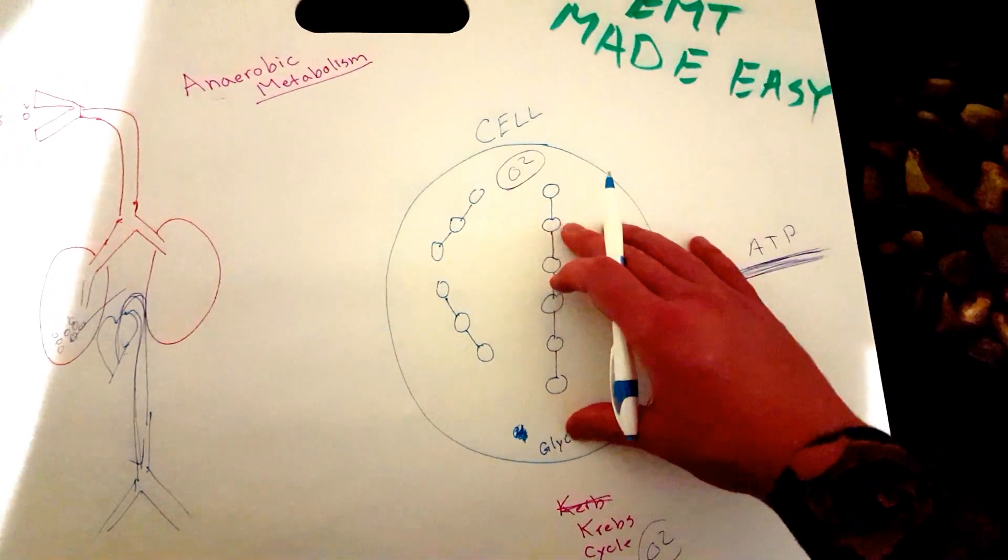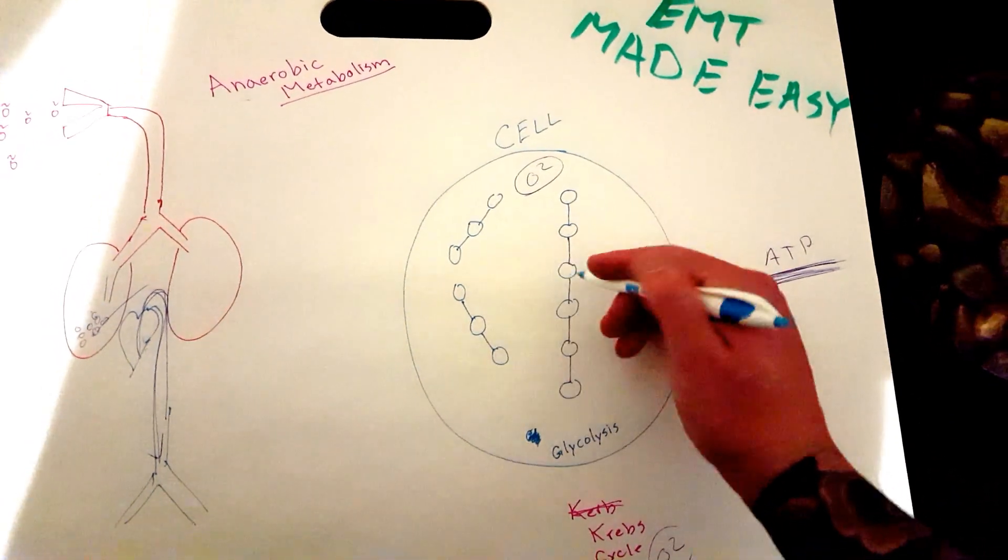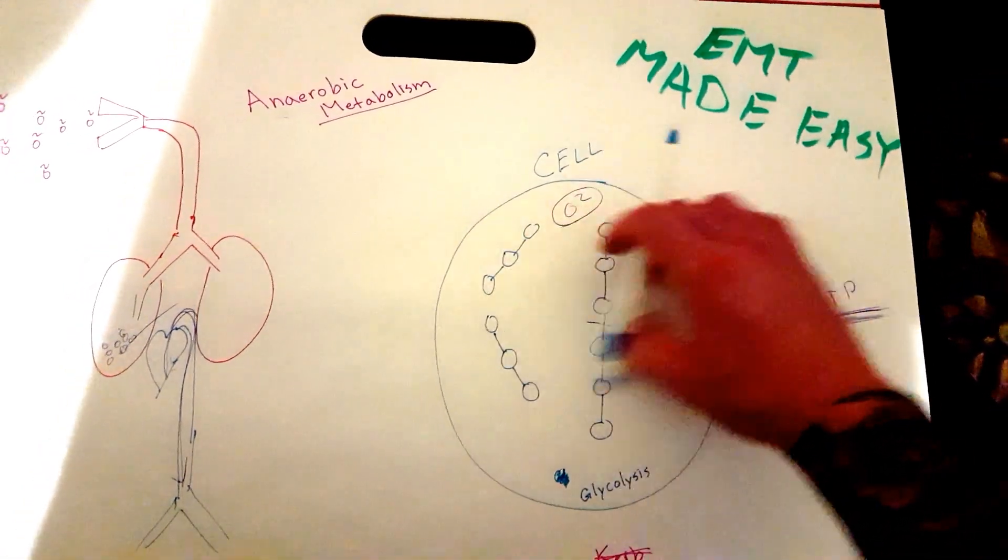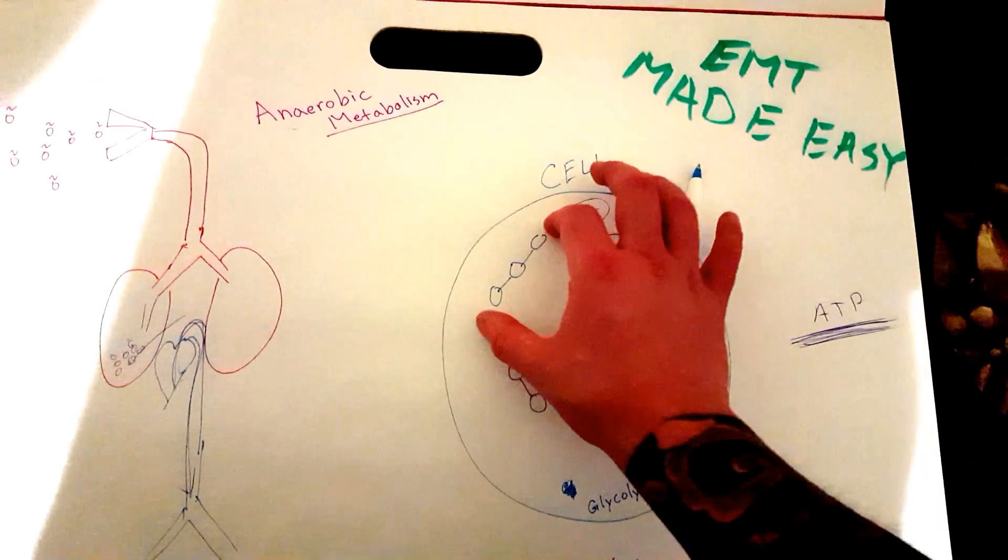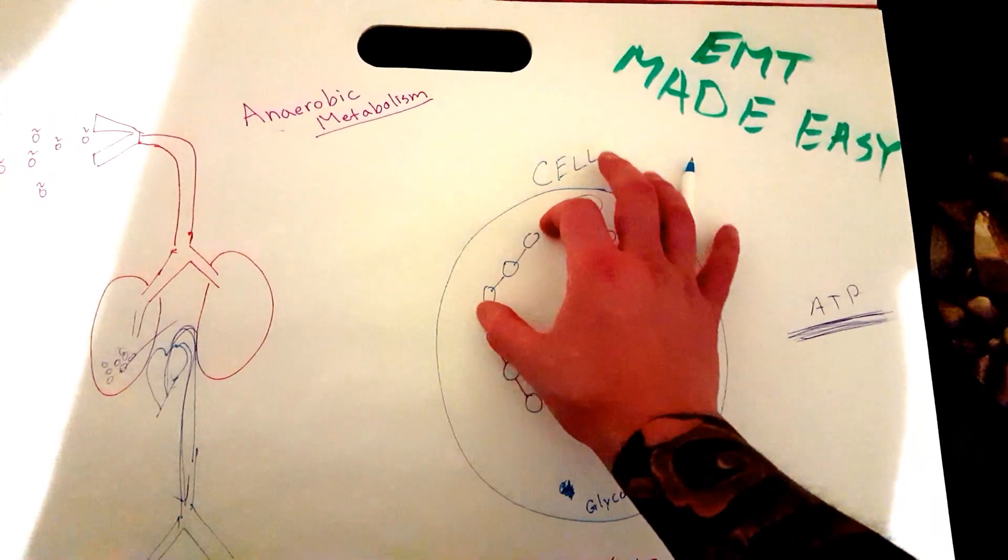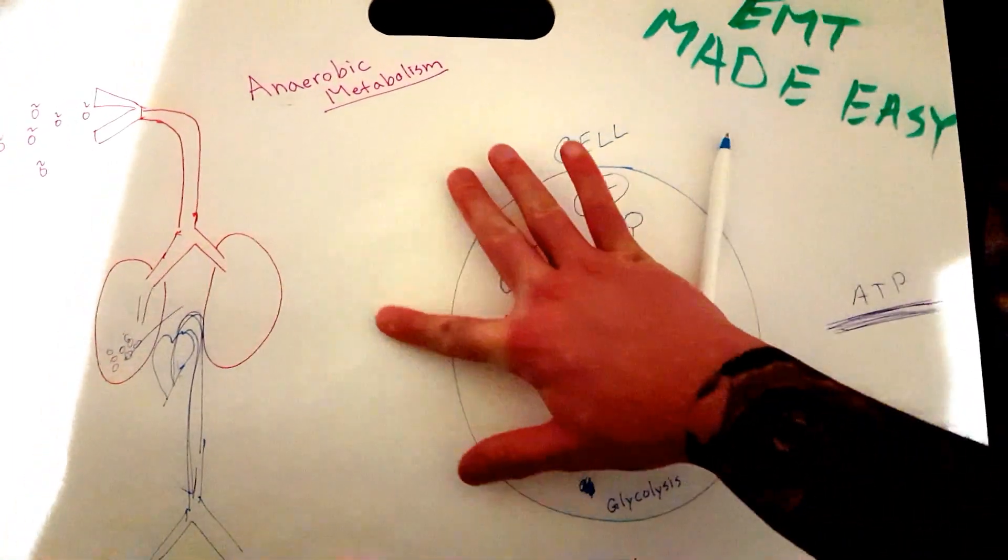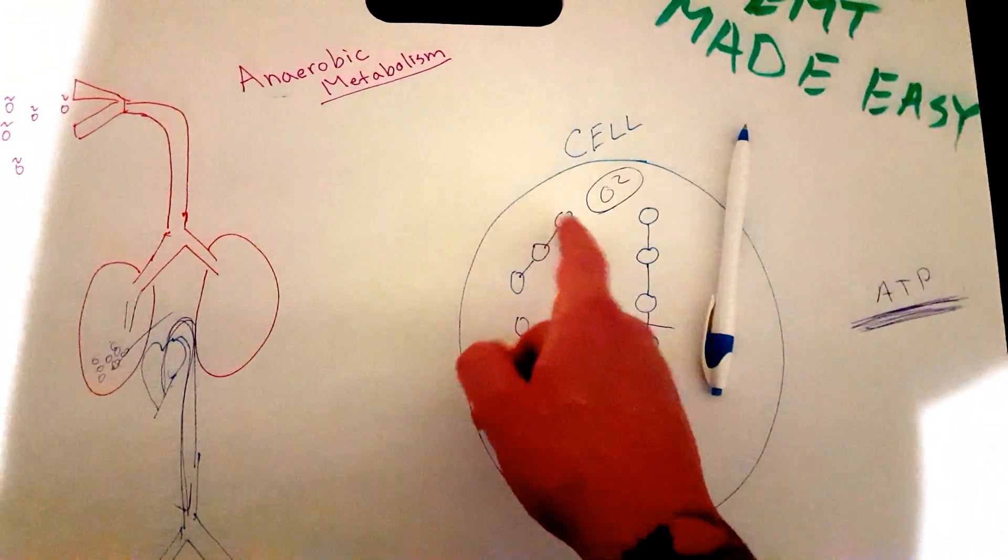And now you have two three-carbon molecules which are called pyruvates, right? And then these go into the Krebs cycle individually. So this one goes into its own Krebs cycle, this one will go into its own Krebs cycle.